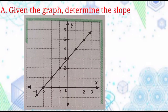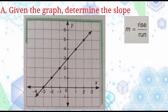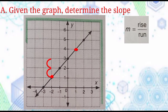For example, given the graph, determine the slope of this line. To find the slope of a line given the graph, use the formula rise over run. Choose any 2 points on the line. Apply the formula rise over run from this point. Count the units it rises: 1, 2,